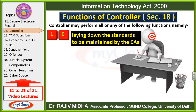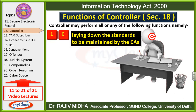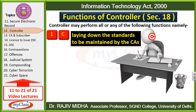C point: Laying down the standards to be maintained by certifying authorities. Yeh function controller ka hai ki certifying authorities kaise kaam karein, unke kaam karne ke tarike ko standardized kar diya jaaye, uske liye rules regulations bana diye jaayein. Controller certifying authorities ke kaam karne ke tarikon ko standard form mein convert kar dega aur kuch standards banaega jo certifying authorities ko follow karne hain.